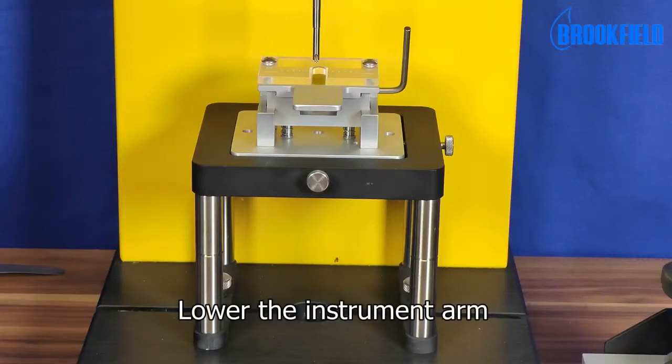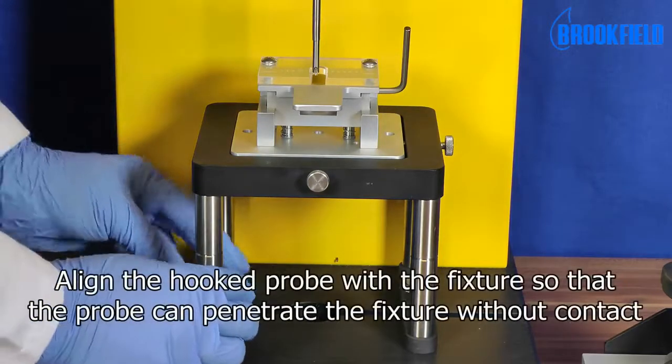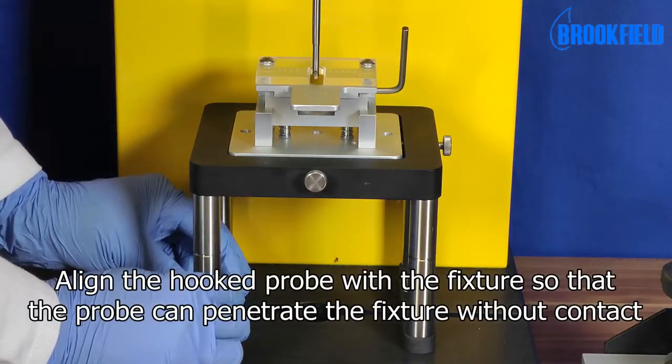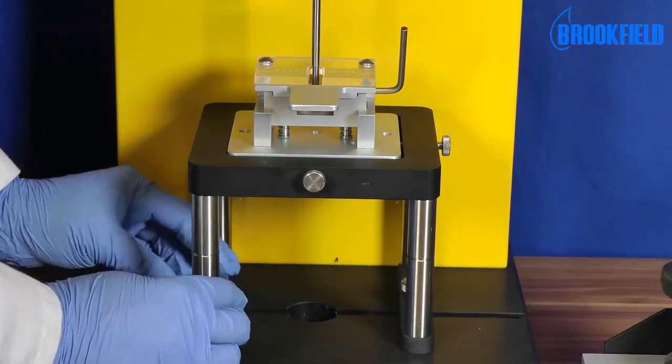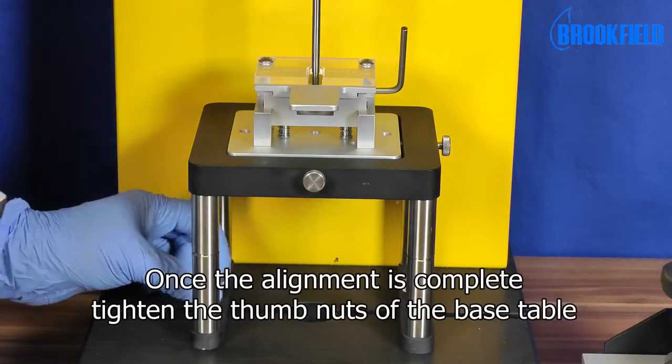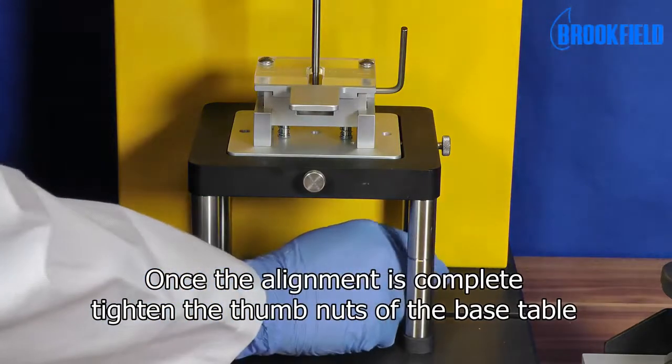Lower the instrument arm and align the hook probe with the fixture so that the probe can penetrate the fixture without contact. Once the alignment is complete, tighten the thumb nuts of the base table.